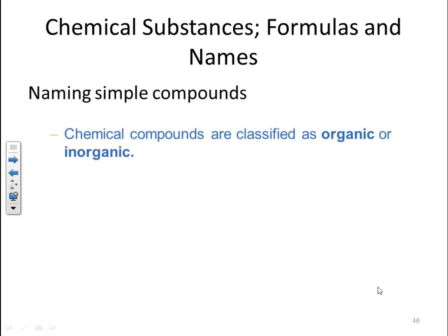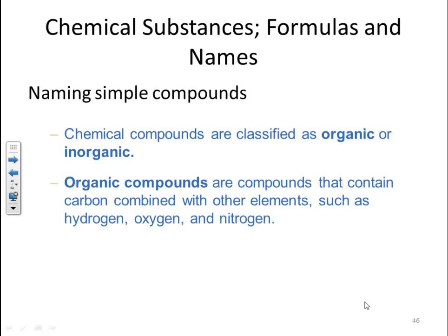Chemical compounds are classified as organic or inorganic. Organic compounds are compounds that contain carbon combined with other elements such as hydrogen, oxygen, and nitrogen. It's its own branch of chemistry.